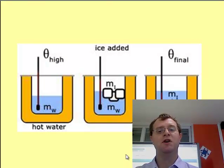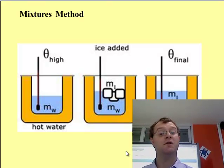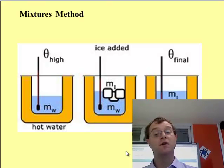Now I want to introduce what's known as the mixtures method. This is a method to work out the latent heat of fusion, the transition of the change of state from a liquid to a solid or vice versa. In this case, we're going to use the melting of ice, changing from a solid to a liquid, to do these calculations.